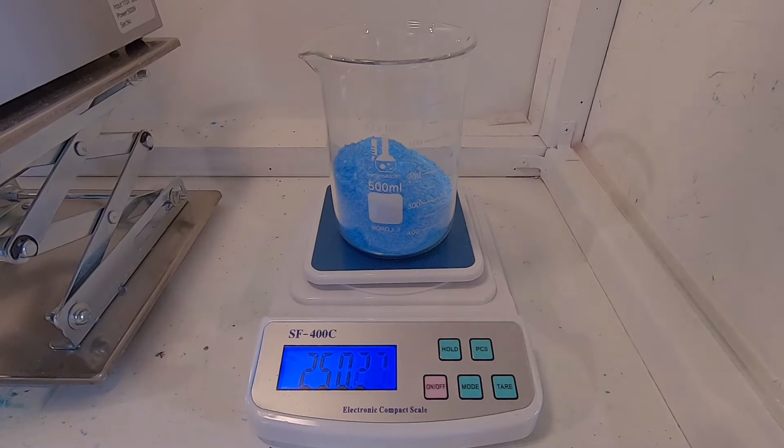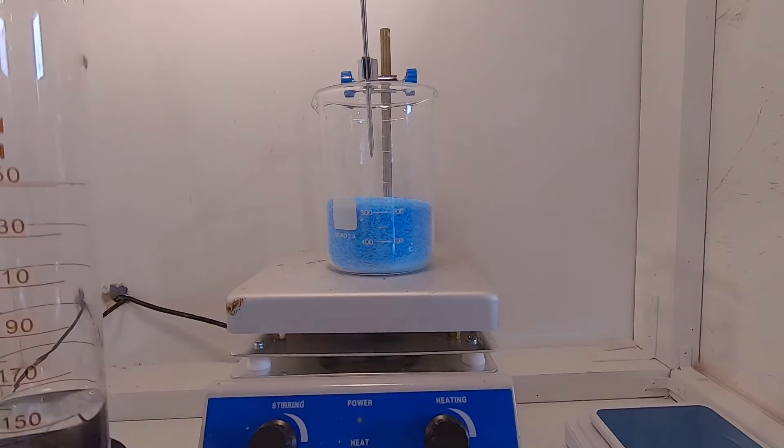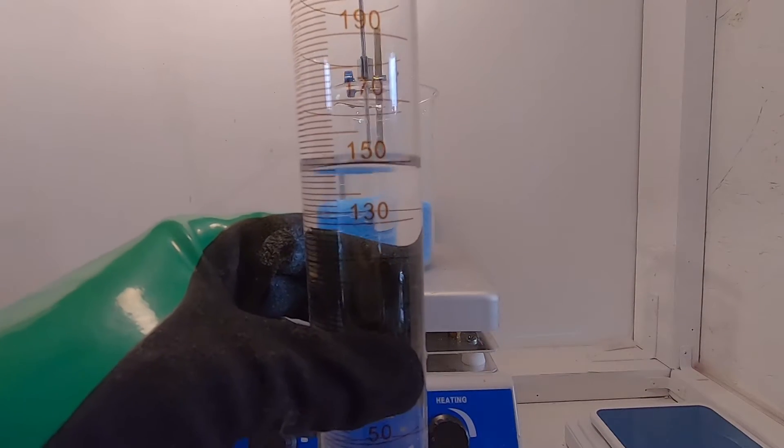First things first, I dissolved 250 grams of copper sulfate into 150 milliliters of H2O.